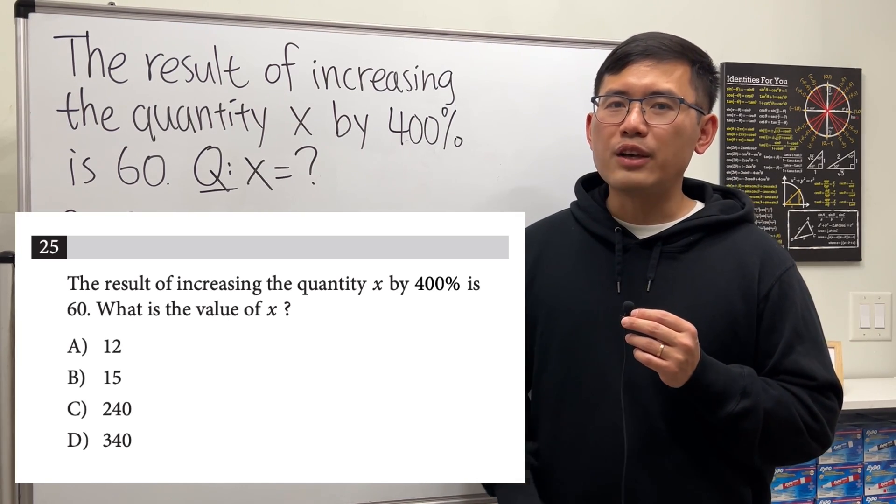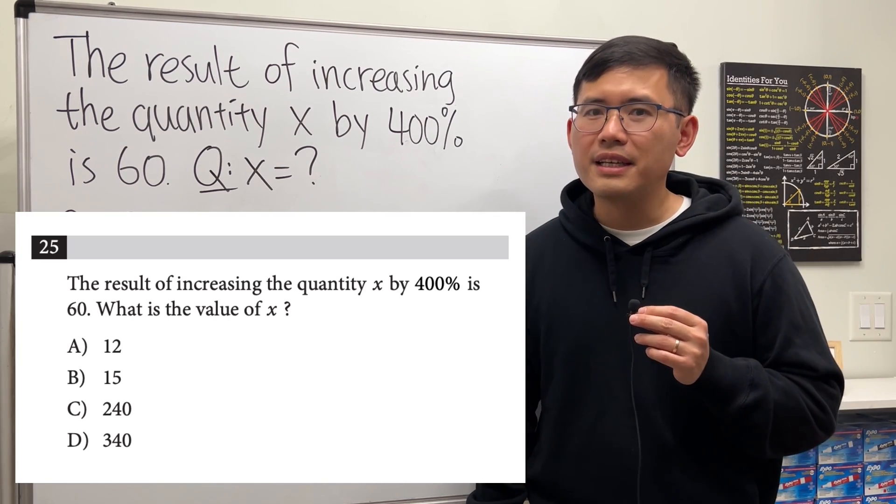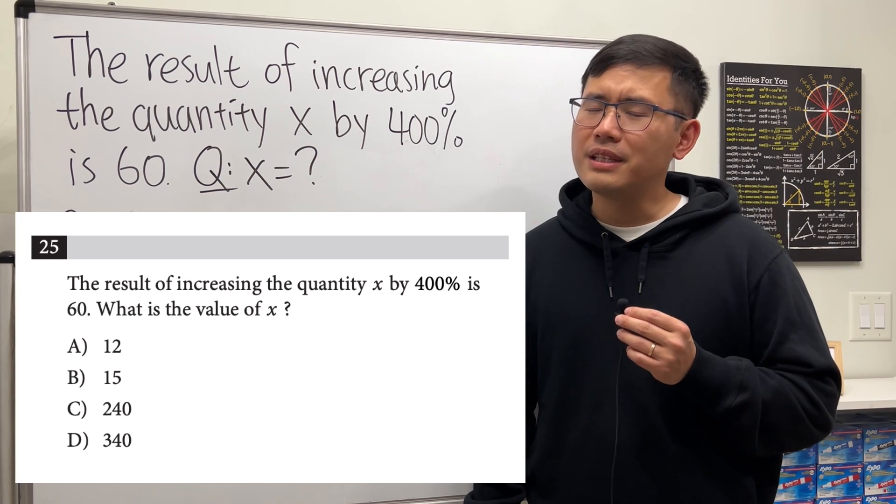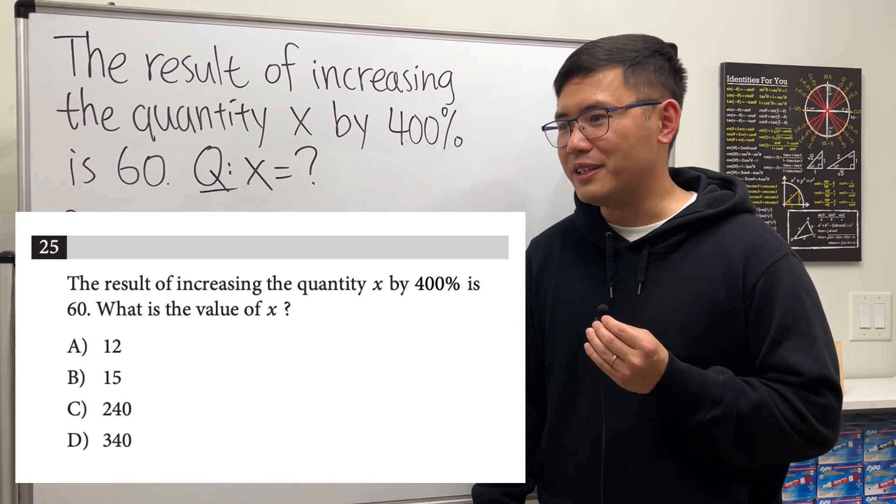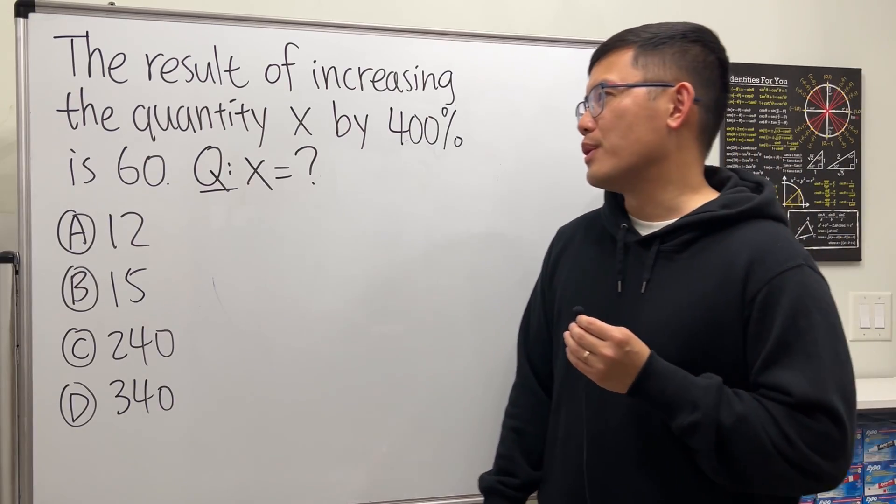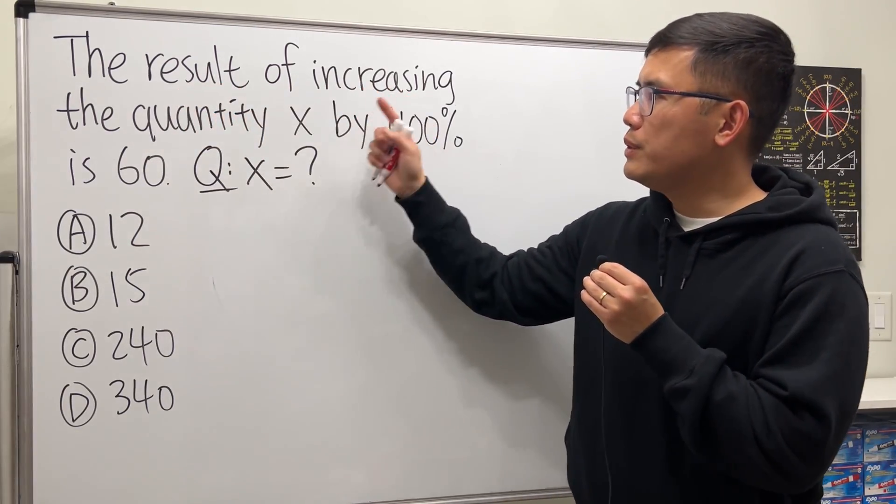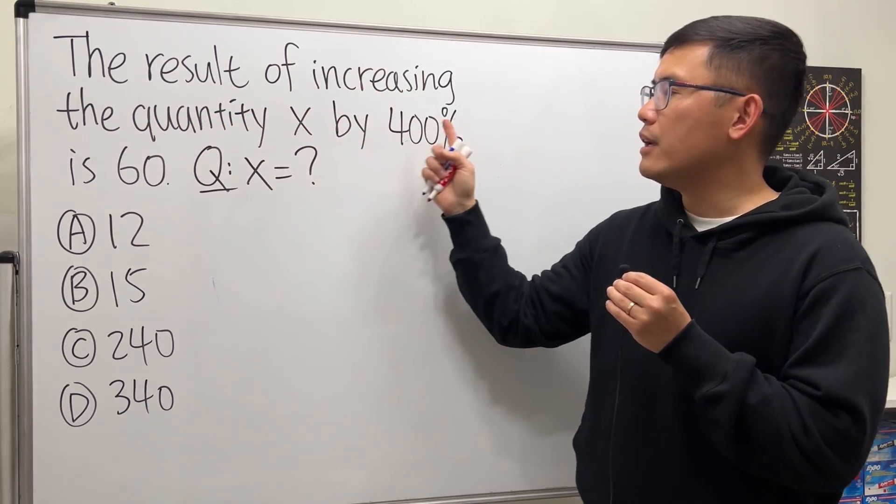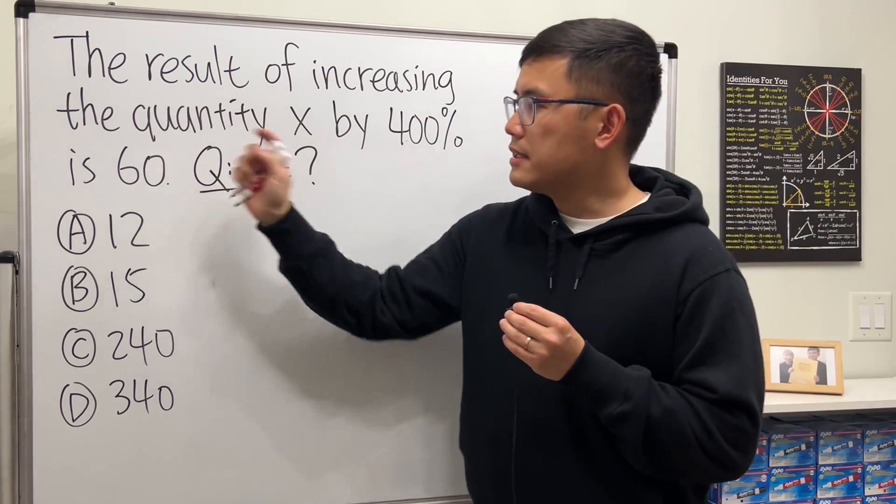Today I want to share an SAT style percentage question with you. SAT math questions are known for their trickiness, so we have to be careful. Here's the question: the result of increasing the quantity x by 400 percent is 60.